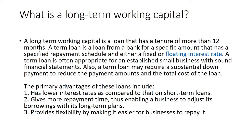The down payment is the initial amount which you pay. For example, when you buy a car of 10 lakh rupees, you pay three to four lakh rupees as a down payment, and the remaining six lakh rupees you take as a loan. So three to four lakh rupees is your down payment.